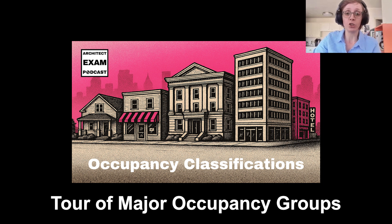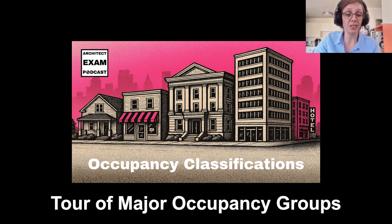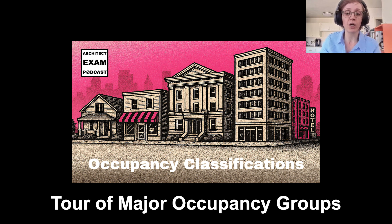The next group is Group H, which stands for high hazard. Group H is for places with dangerous materials — think chemical plants or fireworks storage facilities and places that handle explosives or toxic substances. The key concerns are explosion risks, toxic releases, and severe fire hazards. These are the buildings with the hazmat symbols that firefighters worry about. Group H has the most restrictive code requirements of any occupancy group, including special ventilation systems, explosion-resistant construction, and strict limitations on building size.